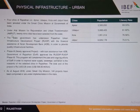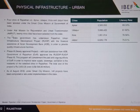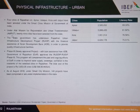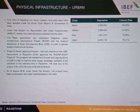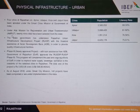4 cities of Rajasthan — Ajmer, Udaipur, Kota, and Jaipur — have been selected under the Smart City mission of the Government of India. The literacy rate in these cities is on average 70%.